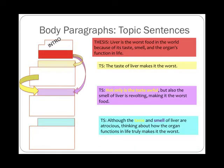Then we move on to the third reason. We're going to do a very similar thing — we're going to link back to the first and the second reason, and then restate the topic, the claim, and the third reason without sounding redundant. So it might be something like this: 'Although the taste and smell of liver are atrocious, thinking about how the organ functions in life truly makes it the worst.' Again, you see we've got that transitional phrase linking it back to the first and second reason. We've re-identified the topic, the claim, and the reason. This helps signal to your reader when you're moving on to each new section of your paper.